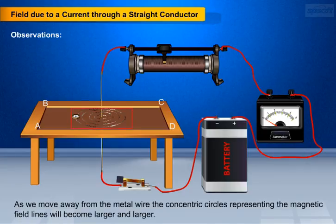And lastly we observe that if we move away from the metal wire, the concentric circles representing the magnetic field lines will become larger and larger.